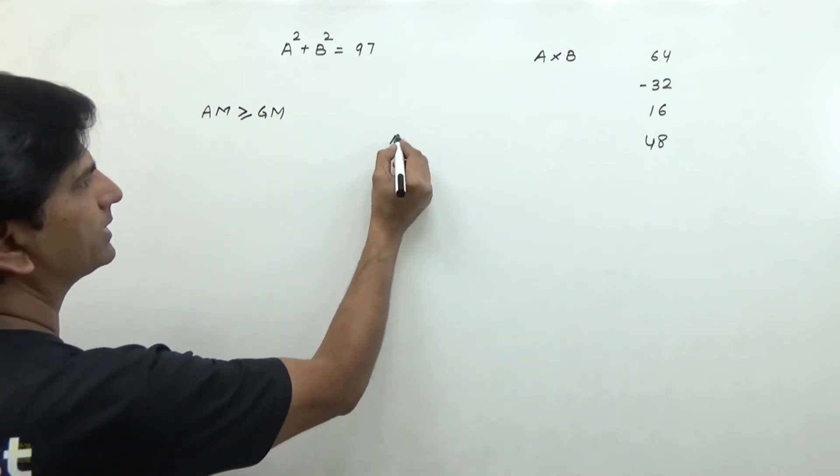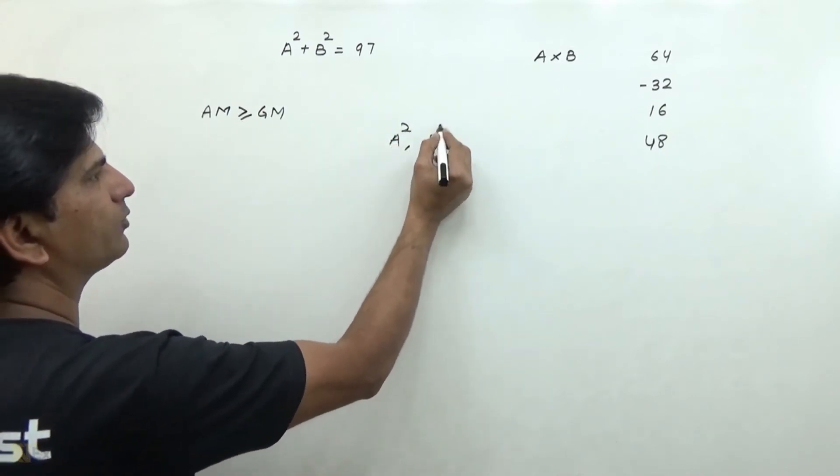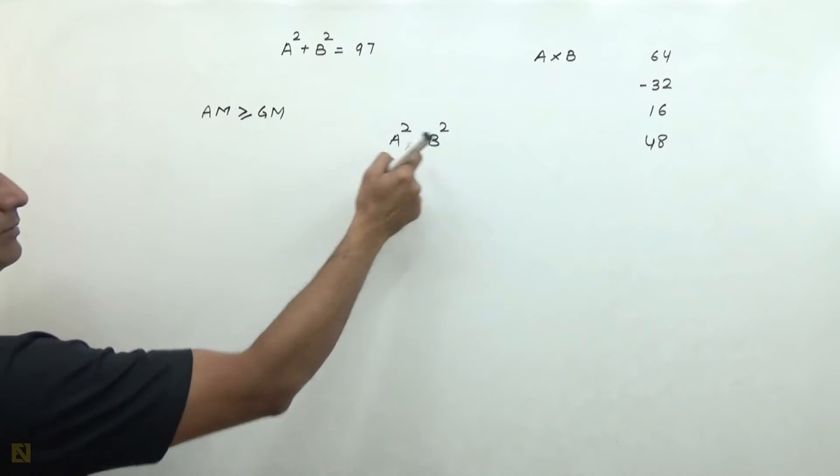let us assume that those numbers are A square and B square. So what does it mean?